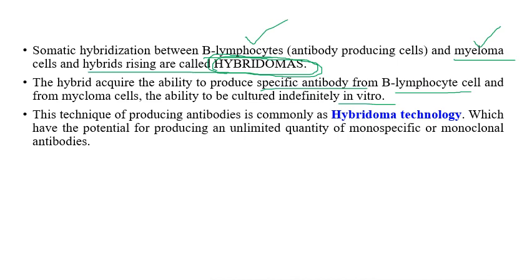Hybridoma technology is used for the production of monoclonal or specific antibodies, capable of producing an unlimited quantity of monospecific and monoclonal antibodies that can be used to treat different types of serious diseases.